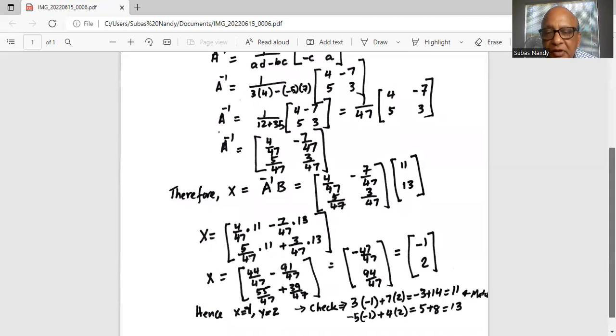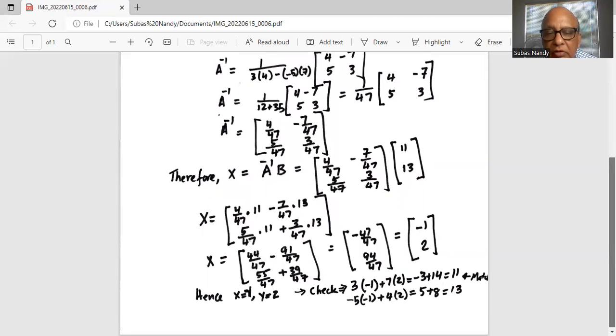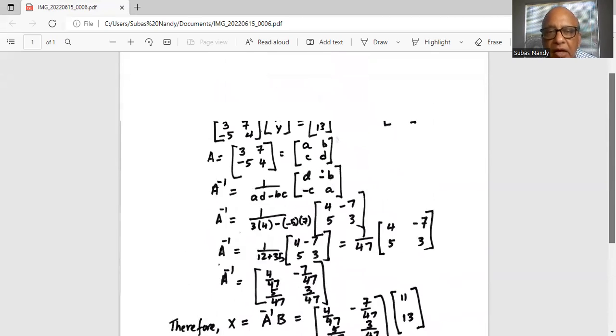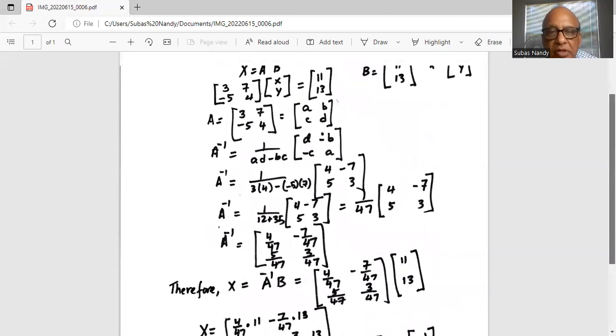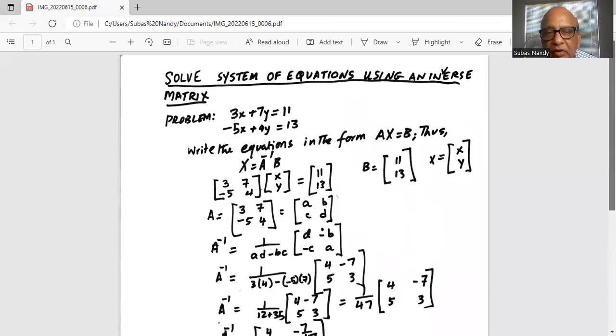Our solution set is the matrix minus 1, 2. That means x equals minus 1, y equals 2. If we plug it back into the original system of equations, we can check whether the left-hand side equals the right-hand side.